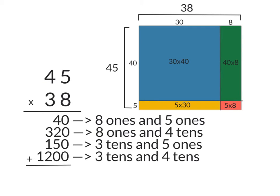Now that we've multiplied all the parts of this multiplication problem, we can add to get a total of 1,710.